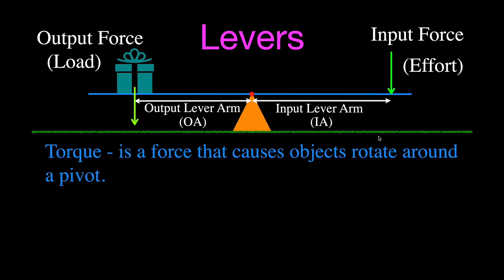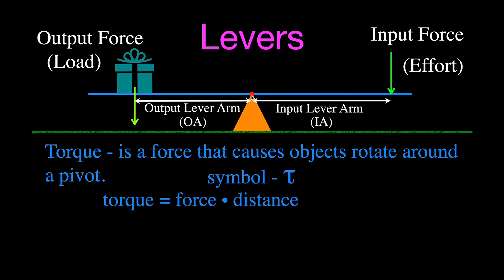Torque is a force that causes an object to rotate about a point or pivot. We give it a special name because it specifically describes rotational force — in our lever's case, rotation around the fulcrum. The symbol for torque is the Greek letter tau, which looks like a capital T. The way we calculate torque: torque equals the force applied times the distance from the pivot to the point of application of the force.